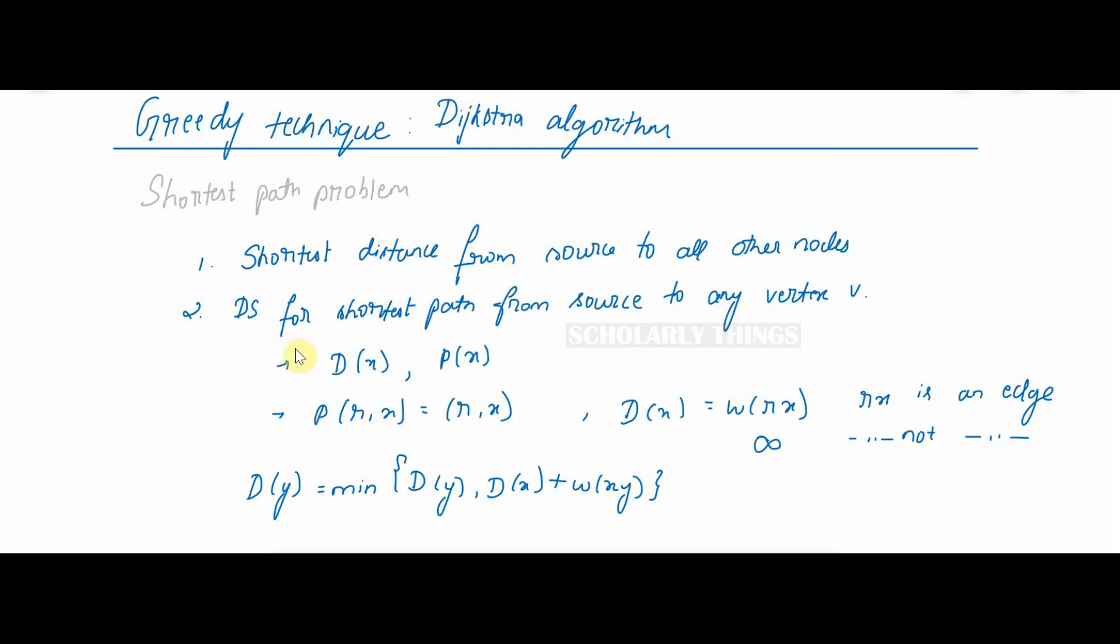At each step and for each vertex X, we need to keep track of the distance D of X and a directed path P of X from root to vertex X of length D(X).